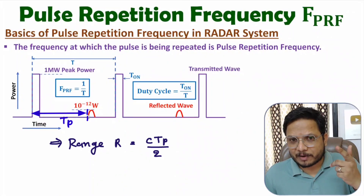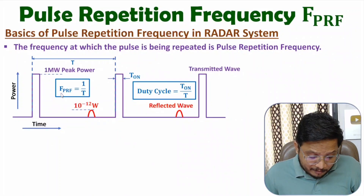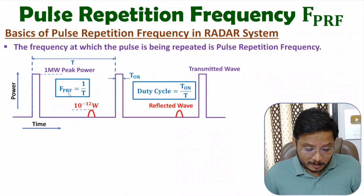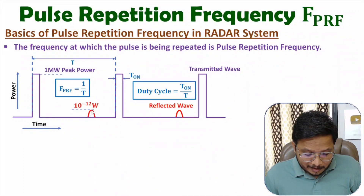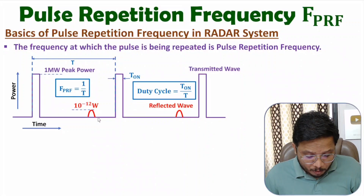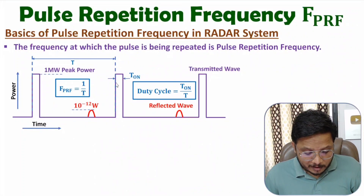I have derived how to identify the value of pulse repetition frequency in my earlier videos — it is purely based on expected range. Let me explain: if we assume a target is at 400 kilometers distance, the echo will appear at a certain position. If the target is at 500 kilometers, the echo comes later. So based on expectation, we should select the delay between two consecutive pulses accordingly.